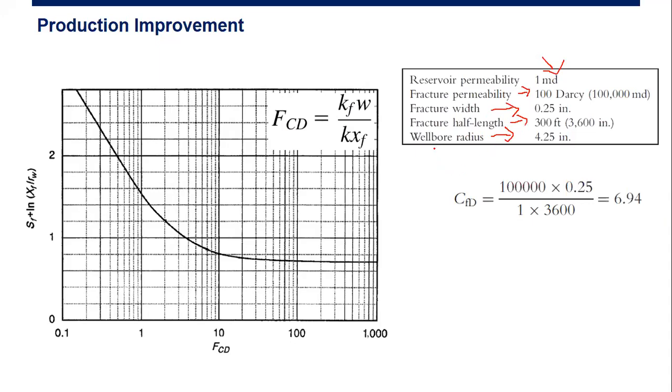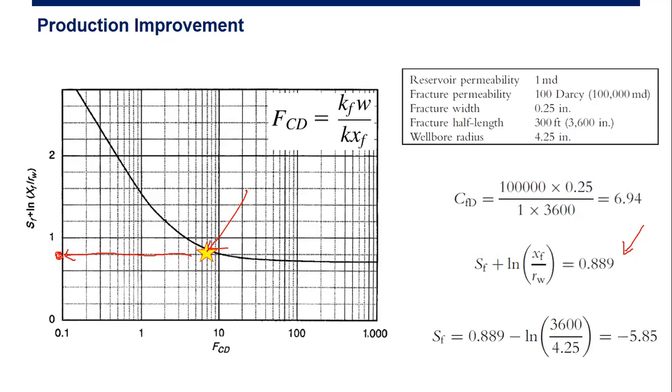CFD equals 6.94, and you locate the CFD there, okay? And from here you can go to the left. You can get the SF plus logarithmic natural of XF divided by RW of 0.889 here. And now we can calculate the SF.